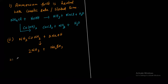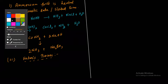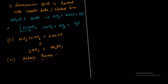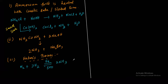The third method is the very common Haber's process. It is the industrial method. In this process, nitrogen reacts with hydrogen — a reversible reaction in the presence of iron as a catalyst, at around 500 degrees Celsius, forming two molecules of ammonia. This reaction is exothermic; delta H is less than zero.